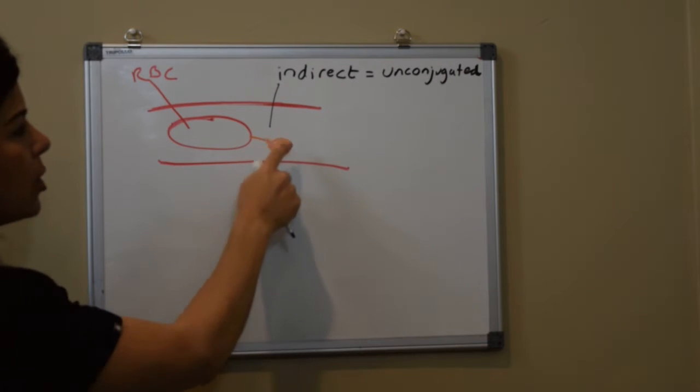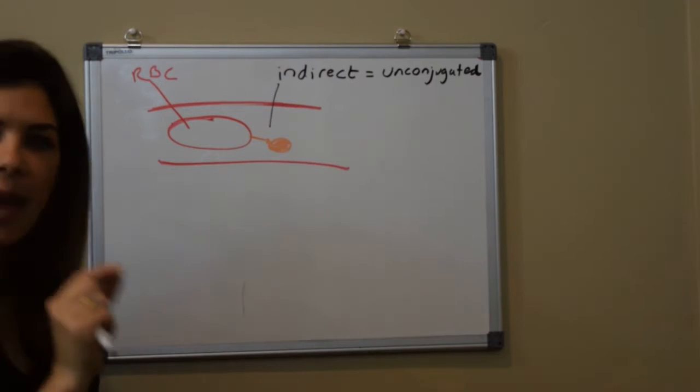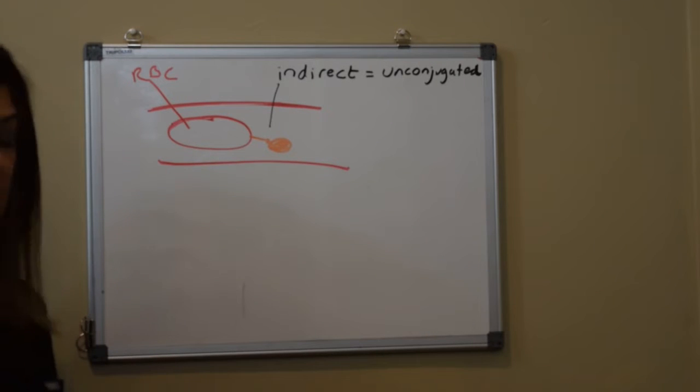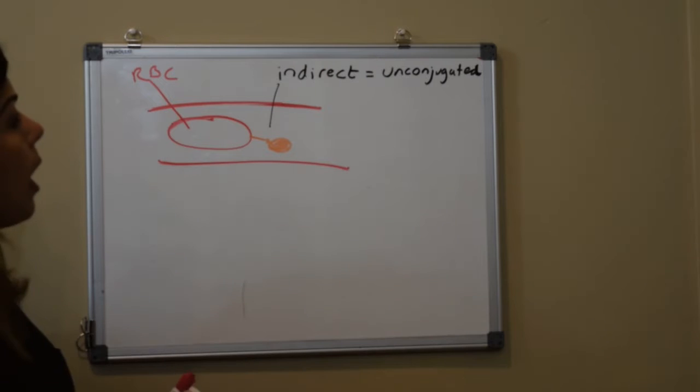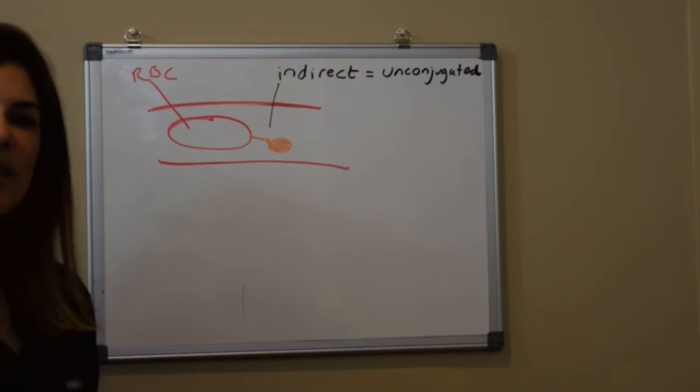What's so important for you to know now is that this indirect bilirubin is actually lipid soluble which means that if this bilirubin gets to a high enough number it is capable of crossing the blood brain barrier and causing kernicterus.